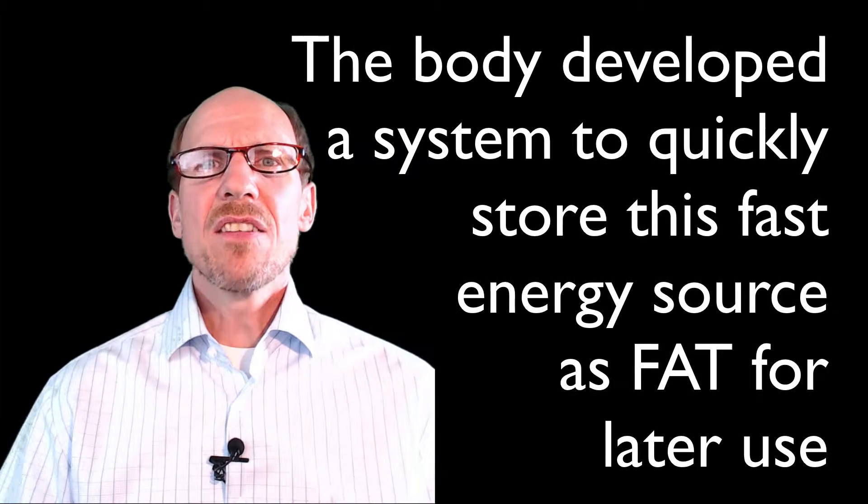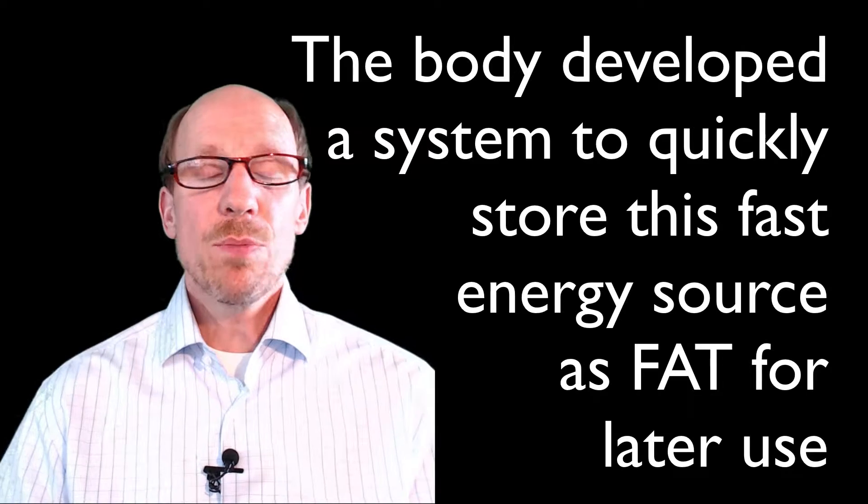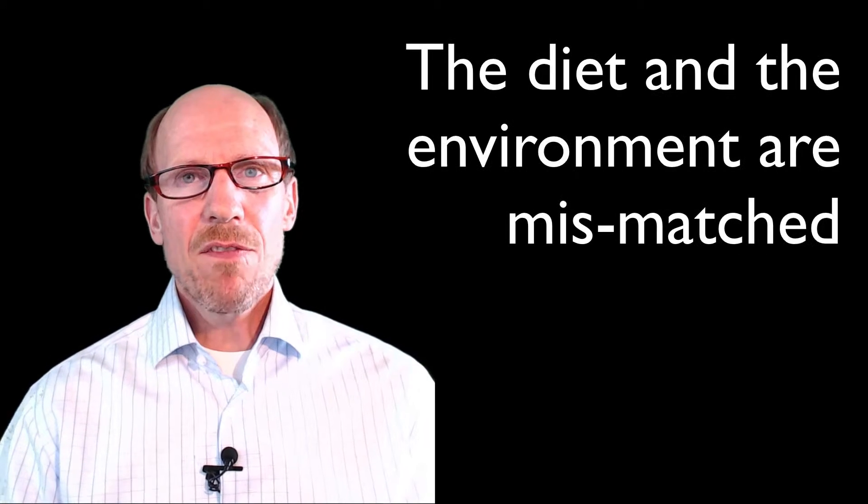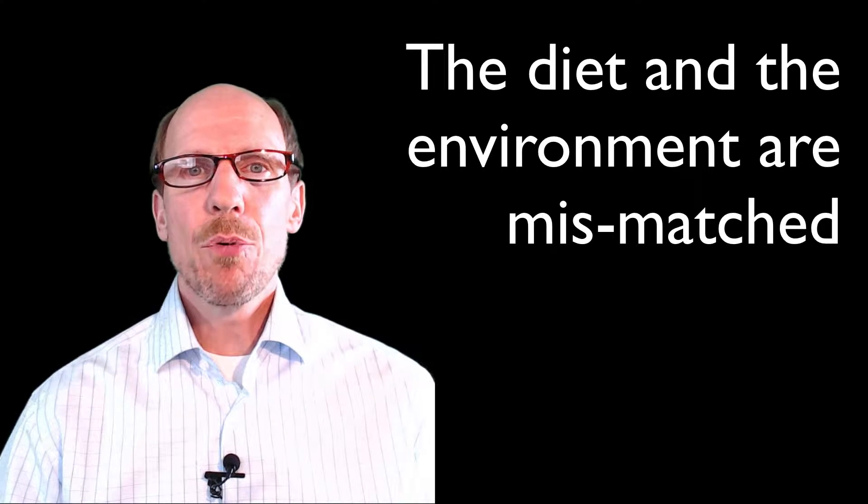Why does this all happen? Evolutionarily, simple sugars have been relatively rare in our diets. When we came across things like honey, cane sugar, or fruits higher in sugars, the body developed a methodology to take this quick energy and store it as fat for later use because we never knew where our next meal was coming from. This has been a really good evolutionary adaptation. However, in modern society, the diet and environment may be mismatched, creating a bit of a problem.